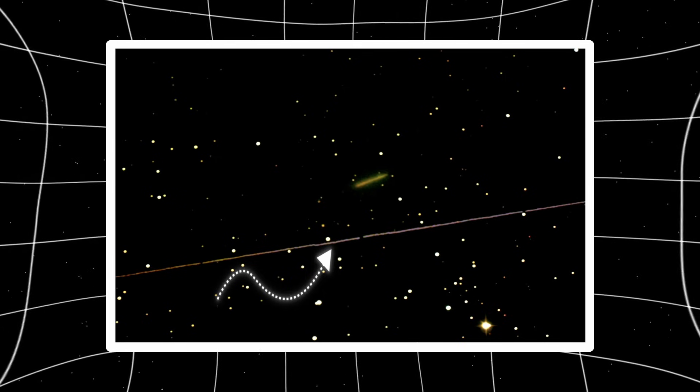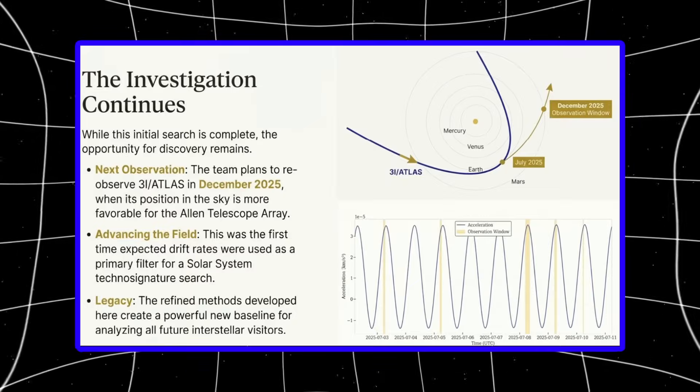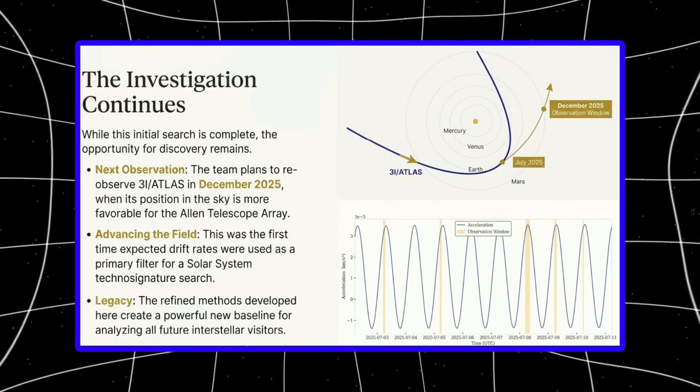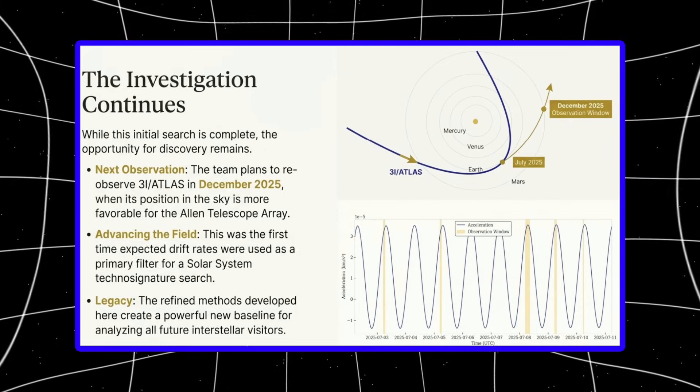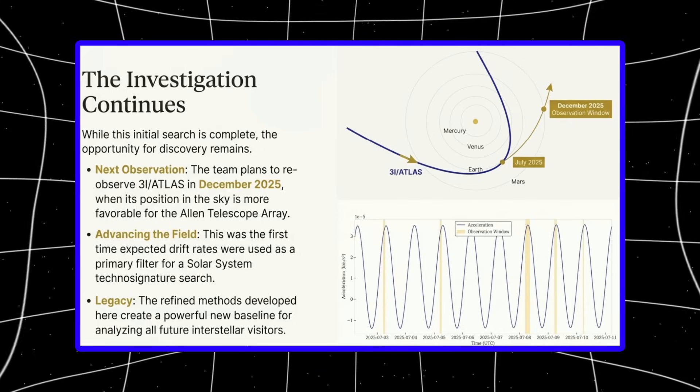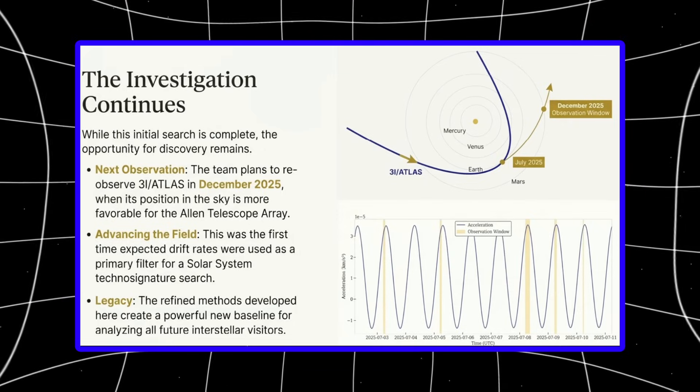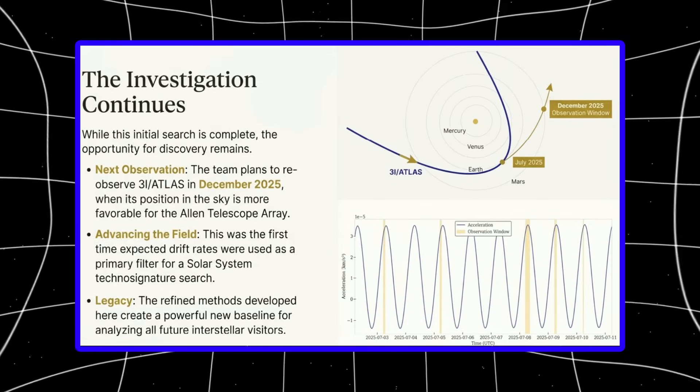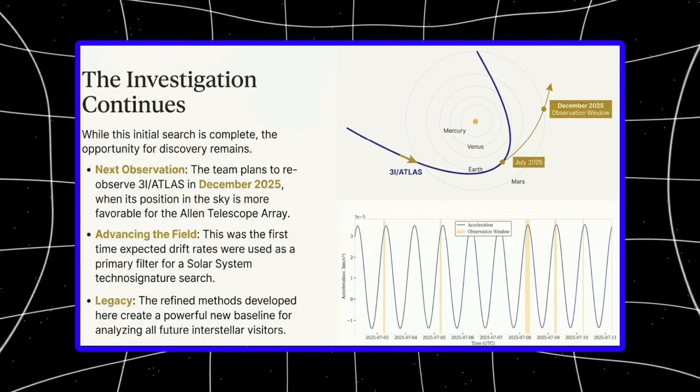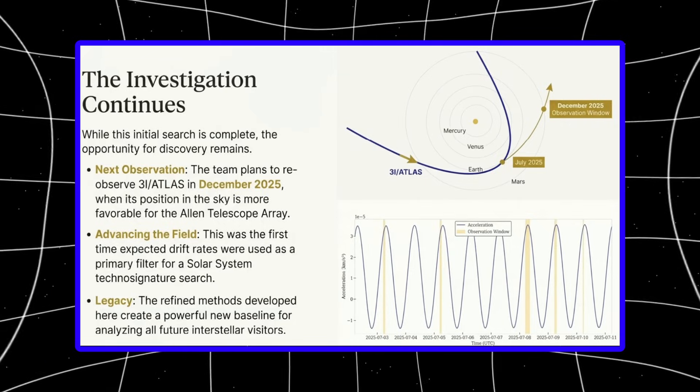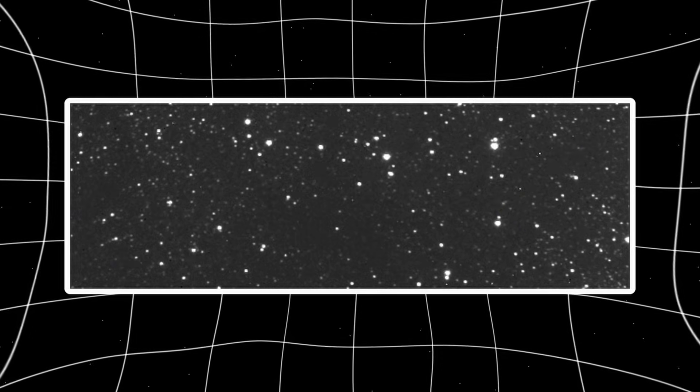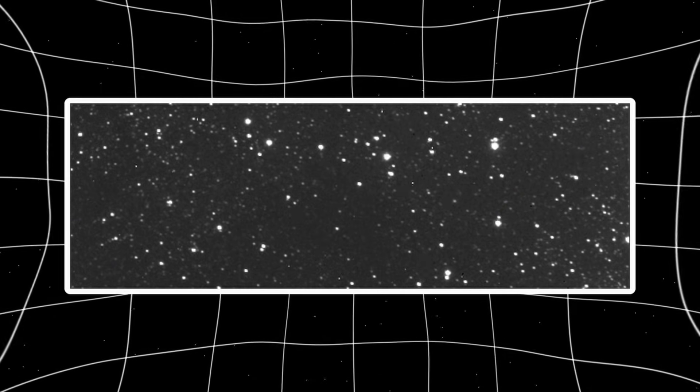But that's not the big news today. Today we got results from the first ever dedicated radio search of an interstellar object. Scientists aimed the Allen Telescope Array at 3i Atlas and scanned 74 million signals looking for one thing: proof of transmission. What they found or didn't find just changed the conversation completely. If you want the truth, no hype, no clickbait, just what actually happened in the last 24 hours, stay with me.